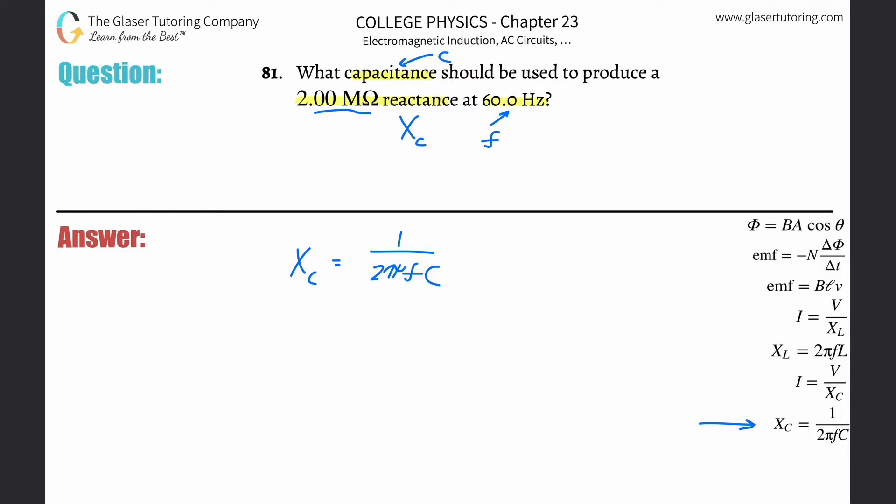Very similar, subtle difference. So now, if we need to find C, then all we've got to do is bring C out of the denominator. Oh, nope, didn't mean to delete that. Bring C out of the denominator, up into the numerator, and bring the capacitive reactance down into that denominator. Look at how nice and easy that algebra is.